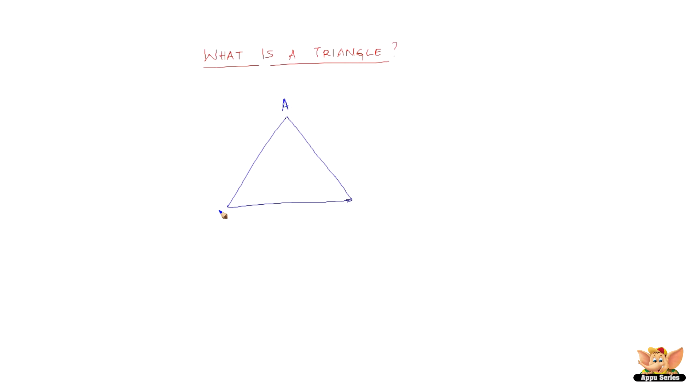We can name this A, B, C. So let A, B and C be the three points, such that they are not in a line but in different lines. Then the line segments AB, BC, and CA form a triangle with vertices A, B and C. These are the vertices.